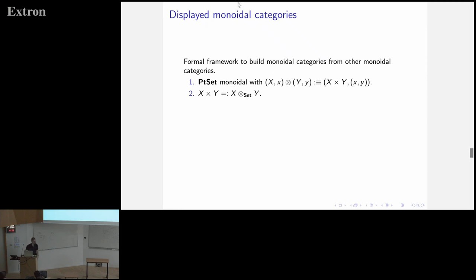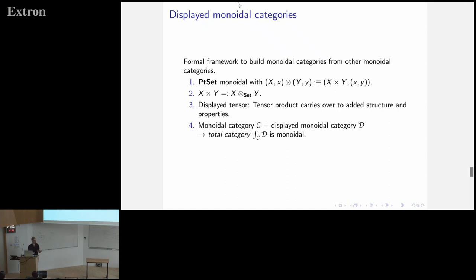And so we then introduce the notion of displayed monoidal categories. And so it consists of a couple of data, but in particular, a notion of a displayed tensor. And so it is just, it's just, let's say, formalizes just how the tensor product should carry over to, and the property should carry over to, in order for the total category, which we already know, just from the displayed categories, to get a canonical monoidal structure. And in particular, what you also have, is that then, this forgetful functor now becomes strict monoidal.